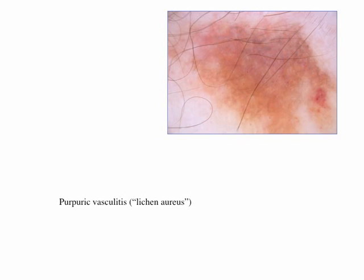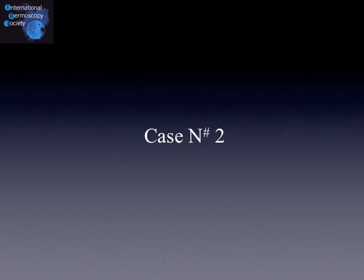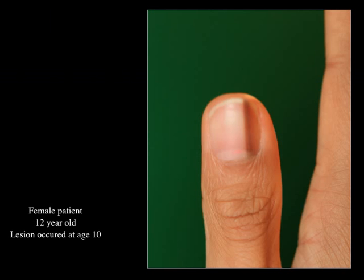That's why we did not consider the diagnosis of a pigmented lesion, but instead made the diagnosis of purpuric vasculitis. Histopathology confirmed the diagnosis of purpuric vasculitis, also known as lichen aureus. This is case number two: a very young female patient, only 12 years old.